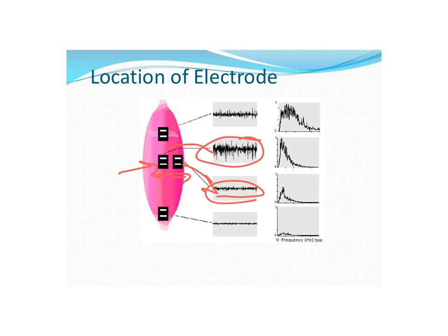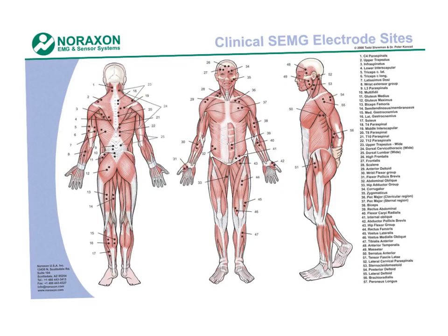If you put it toward the myotendinous junction, you will almost flatline the signal, and even moving it proximal or distally on the muscle will affect the amplitude of that signal. So location is key.